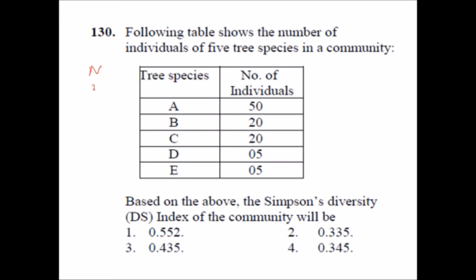There were two alphabets, one was capital N and another was small n. Here the capital N represents the individual number of individuals in each tree species. So here N represents 50, 20, 20, 0.5, and 0.5. Before calculating this I must say there are two formulas to calculate the Simpson's index diversity index.